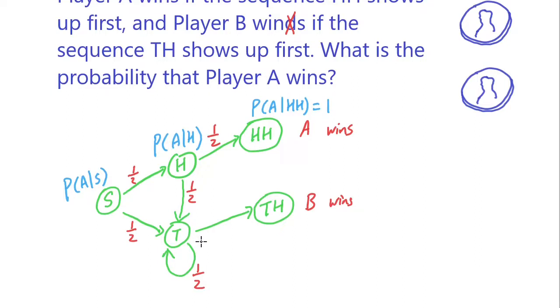Let's also model this one: probability that A wins at state T. We don't know what it is yet, but we can draw the next one, which is the probability that A wins given TH. That's zero, because at this state player B wins and player A would have lost.